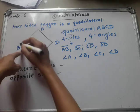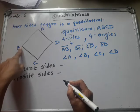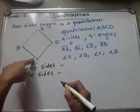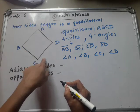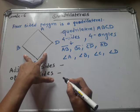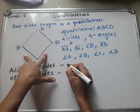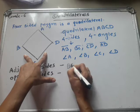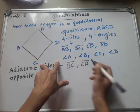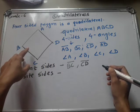Opposite side means the side directly across — that is the opposite side. Adjacent sides means the neighboring side — one point is common. So here, line segment BC and line segment CD share a common point C, so these two line segments are called adjacent sides.